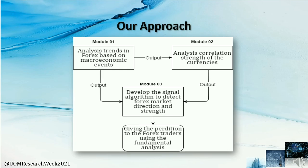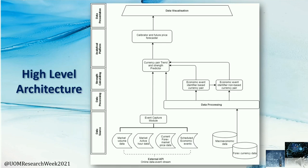The high-level architecture has five levels: Data Source Layer, Data Processing Level, Strength Calculating Level, Analytical Platform, and Data Presentation Level. In the Data Source Level, we use macroeconomic data and forex currency data, and as an online data event stream we use external APIs to capture those data events.